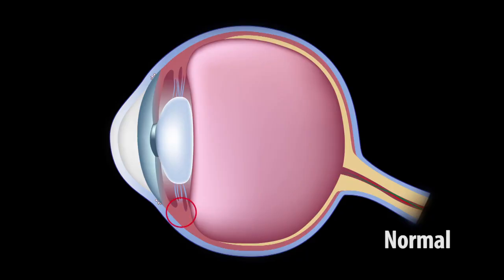In Canada, glaucoma affects about 300,000 people that are known to have glaucoma. But stats have also showed that probably half the people who have glaucoma don't know they have it. So the true incidence of glaucoma is probably much higher.